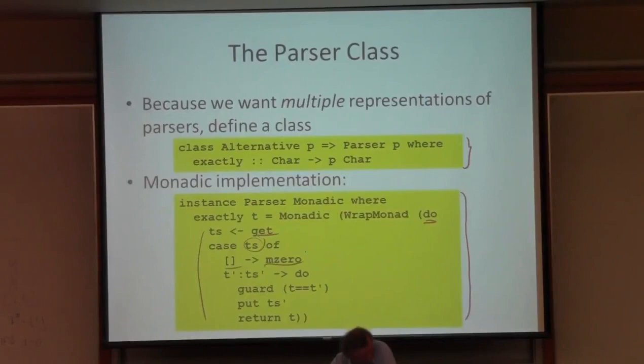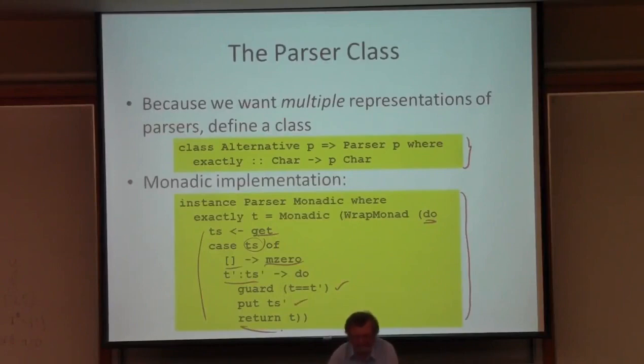It reads the input, inspects it. If it's empty, we fail. It's a monadic computation now, so I can fail with M0. Otherwise, I look at the first symbol. I check that it's the token I'm looking for, or I consume the token, and then I just return the result. So this is very similar monadic code to what we saw yesterday.